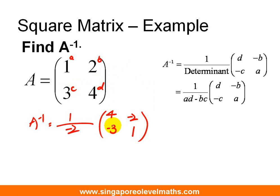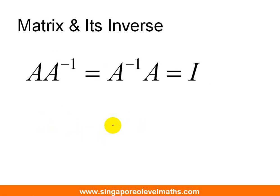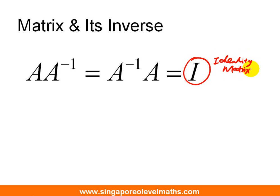Now, some of you might be wondering, so, what do we need A inverse for? To answer that question, you need to understand a special property between the product of your matrix and its inverse. Inverse and its matrix, it gives you a very unique matrix that we term it as I. It stands for Identity Matrix. What is Identity Matrix? It looks like this. 1, 0, 0, 1.